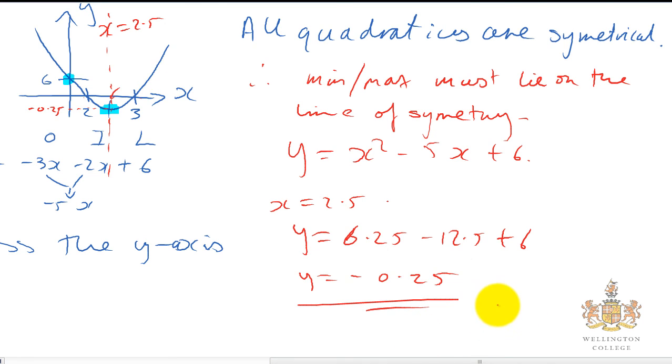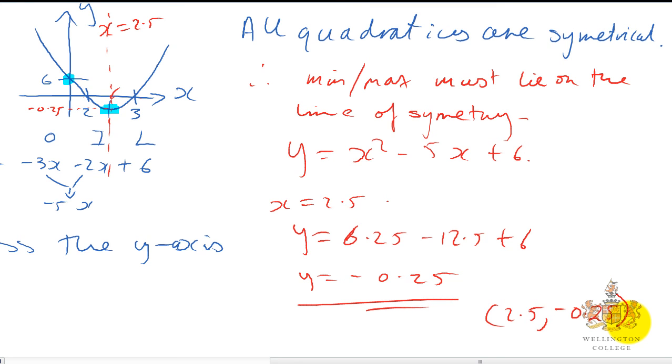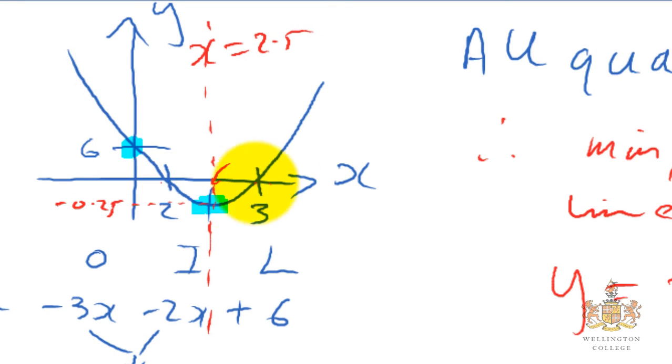So the value here is minus 0.25 and the x value here is 2.5. So the actual coordinates would be 2.5, minus 0.25. And now we've got all our key points to the graph. We've found where it crosses the x-axis, where it crosses the y-axis and where the minimum point occurred. So we can now label our graph y = x² - 5x + 6.